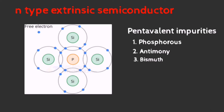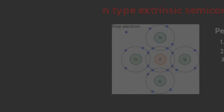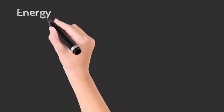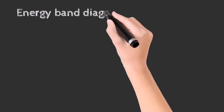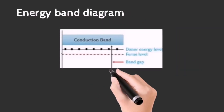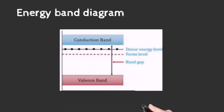Let's look at the energy band diagram of N-type extrinsic semiconductors. The donor energy level in the energy band diagram shows the energy level of free electrons present in the crystal. These electrons have sufficient energy even at room temperature in order to reach the conduction band, thereby decreasing resistance and increasing conductivity.